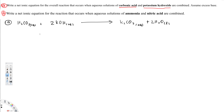Next we have to check whether these compounds will dissociate in water. We check that using solubility and strong electrolyte rules. According to those rules, carbonic acid will not dissociate, KOH will dissociate, and K₂CO₃ will dissociate. Since water is liquid, it remains the same. So only KOH and K₂CO₃ are going to dissociate as ions.